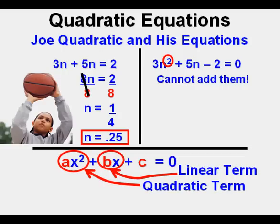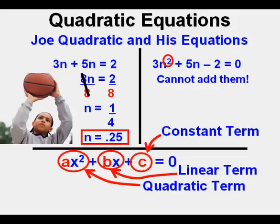This second term is called our linear term. It forms a line if you graph it by itself. And finally, this third term is called the constant term. It always has the same constant value no matter what x is. With no x next to it, the value of this term never changes, no matter what the value is for x.